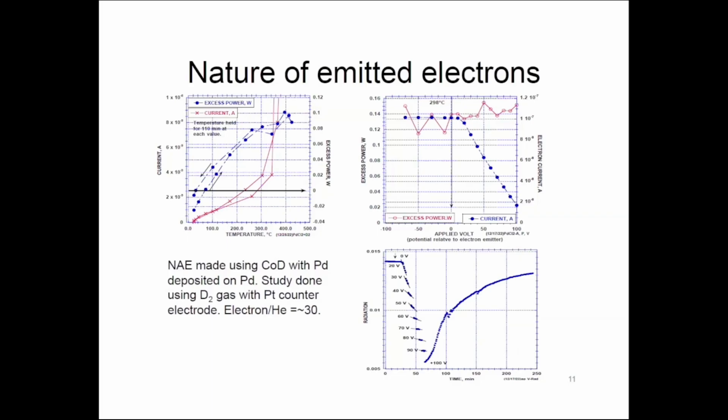This is far more energy than can be generated by a chemical process. This has to be nuclear. But if you look at the effect of time on that measurement, you discover that there is an effect of time as the voltage is changed. And when 100 volts is applied, the number of electrons increases, and so does the power. I can explain that, but not now. I don't have enough time for that. Let's look at the next slide.